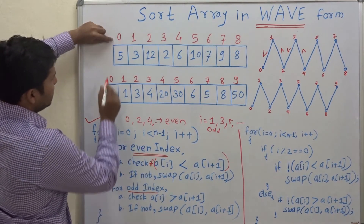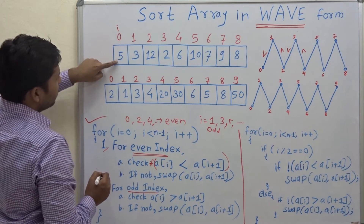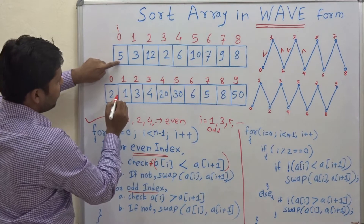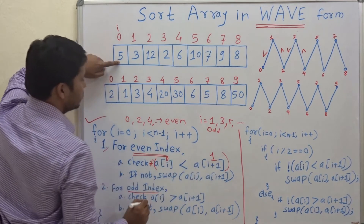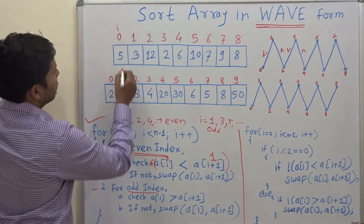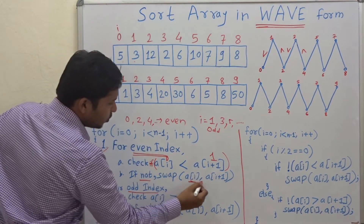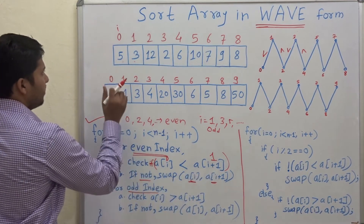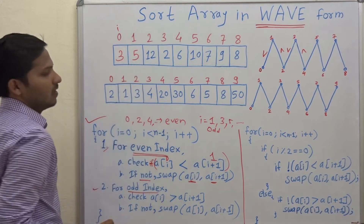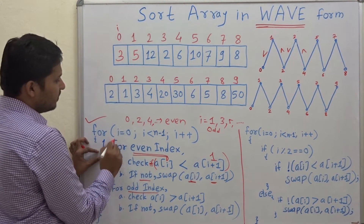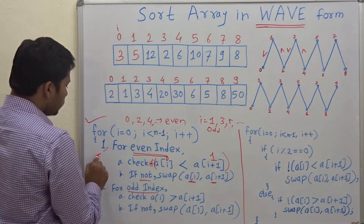Let's start the loop. First, i is 0. Since 0 is an even index, check whether a[0] = 5 is less than a[1] = 3. Five is not less than 3, so you have to swap those two elements. After the swap, 3 comes to index 0 and 5 goes to index 1. Since this was an even index, we do not go to the second step — that is only for odd indices. Move to the next iteration.